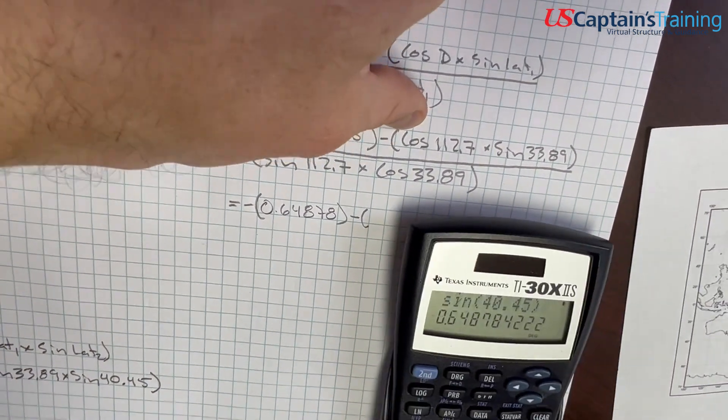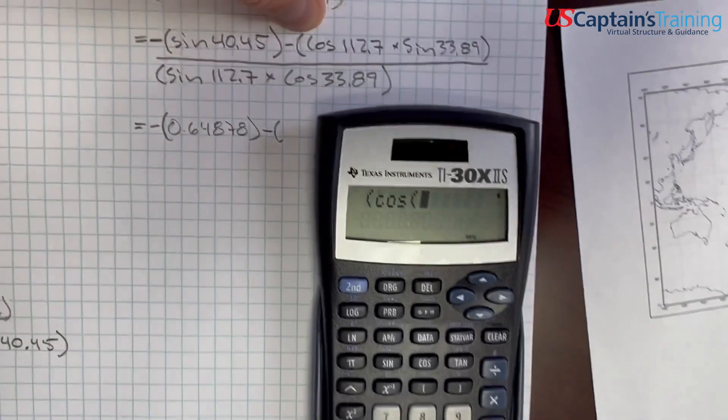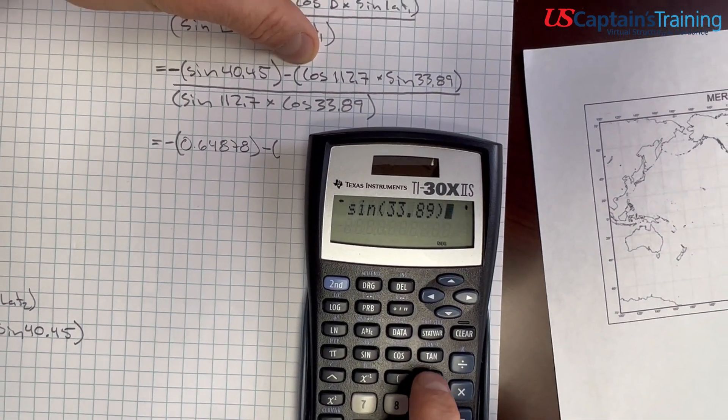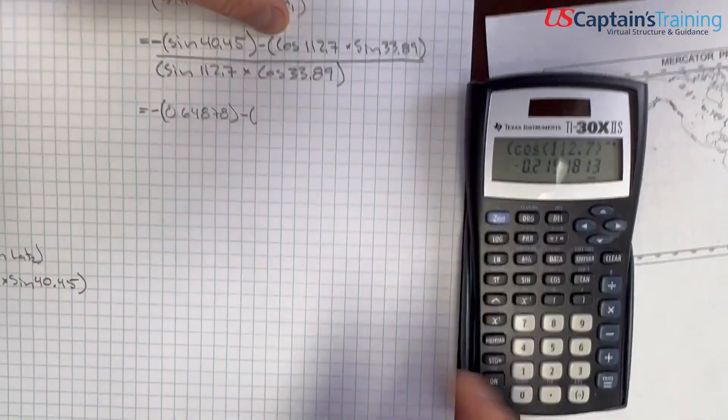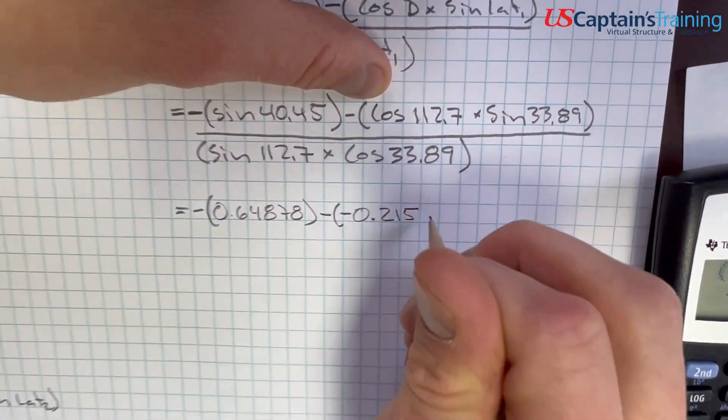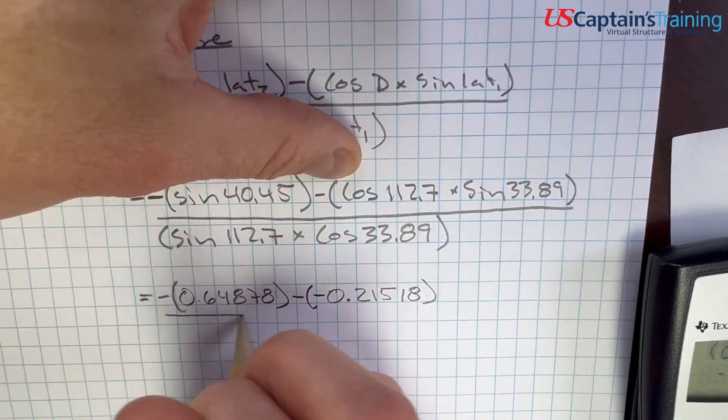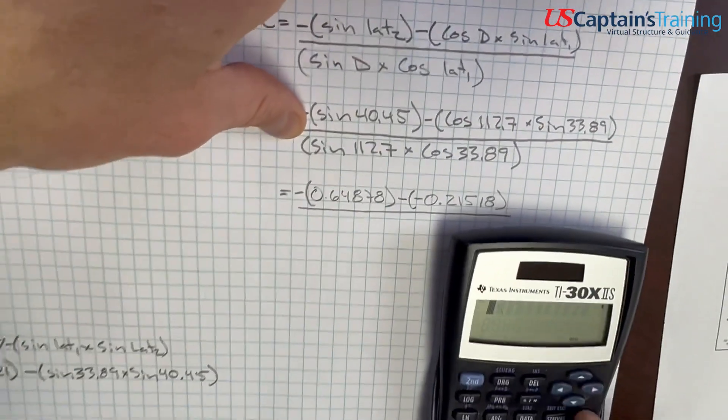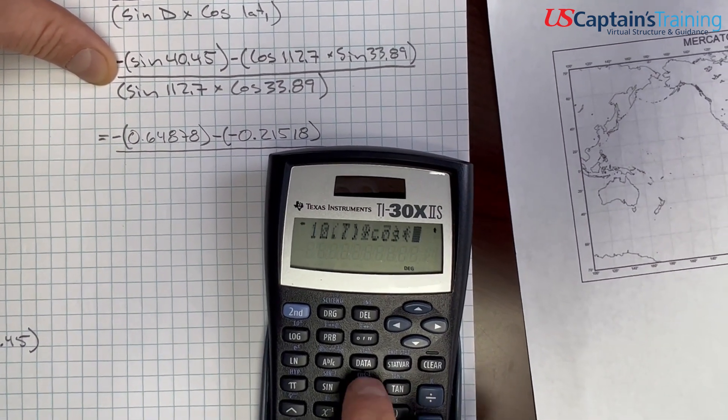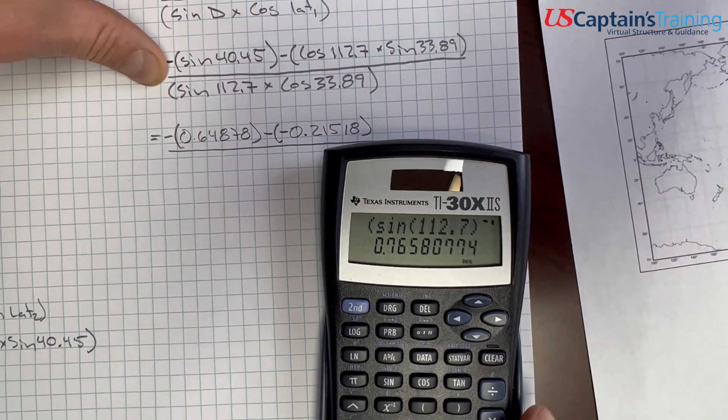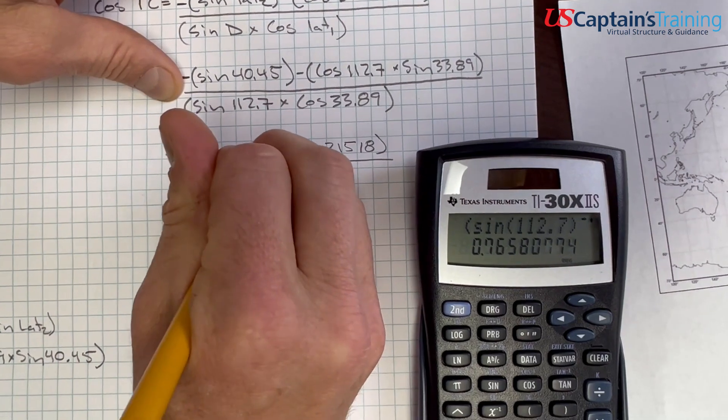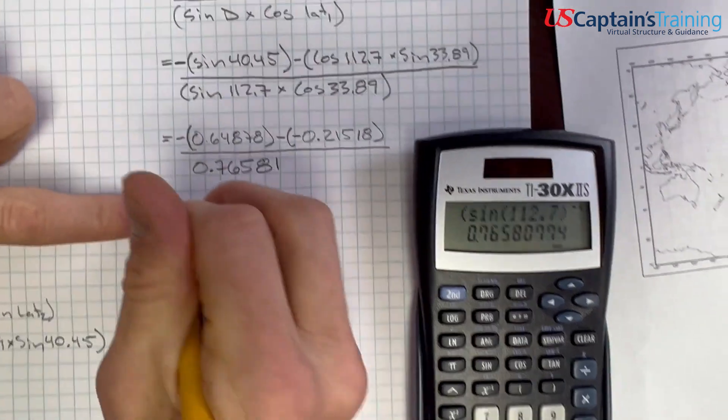So, we open the parentheses and say, cosine 112.7, times sine 33.89, enter. Negative 0.21518, over, open parentheses, sine 112.7 times cosine 33.89, enter. 0.76581. Okay, let's keep working this. Let's get this top one. Negative 0.64878, and a negative and a negative is a positive, plus 0.21518, enter. So we get negative 0.4336.